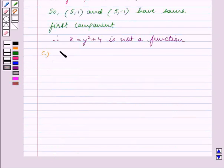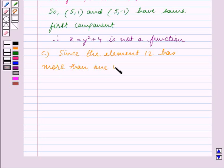Since the element 12 has more than one image, therefore the given relation is not a function.